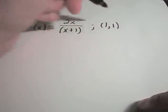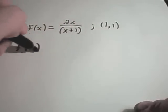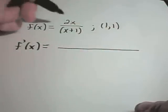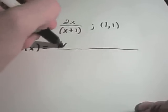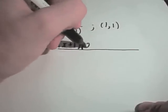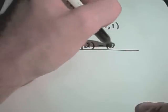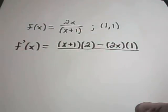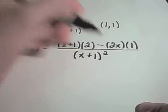Again, we know the point it goes through. The only thing we really have to work to find is the slope of the tangent line. Since I have a fraction, I'll use the quotient rule. It says you write the bottom, multiply by the derivative of the top, put a minus sign in, leave the top alone, take the derivative of the bottom, and put it all over the bottom squared.